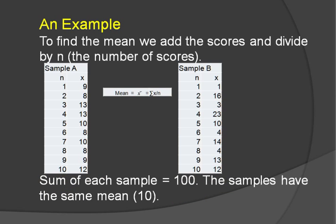To find the mean, we just add up all the observations. As you can see, our total is 100 in both cases. 9 plus 8 plus 13 and so forth gave us 100 here. 1 plus 16 plus 3 plus 23 gave us 100 here. We divide by the ten observations, and so the mean is 10 in both cases.